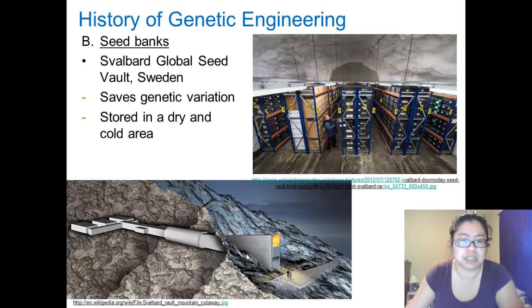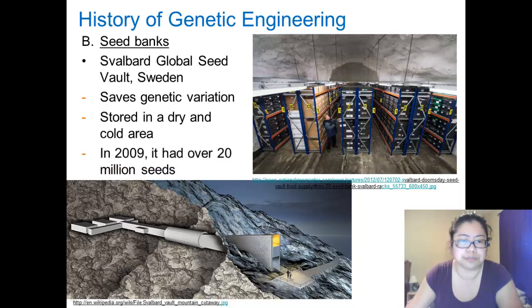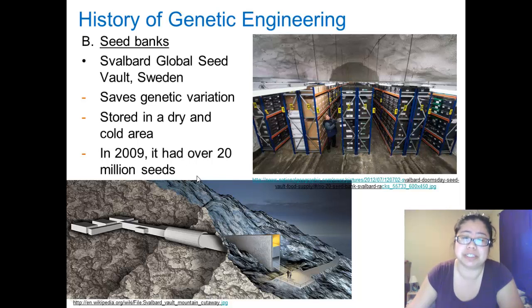Here is a rendition of the Svalbard Global Seed Vault. There is an entrance about 300 yards into the mountain, which means if the temperature changes on the outside, it is well insulated inside the rock. In 2009, it had over 20 million seeds — quite impressive.